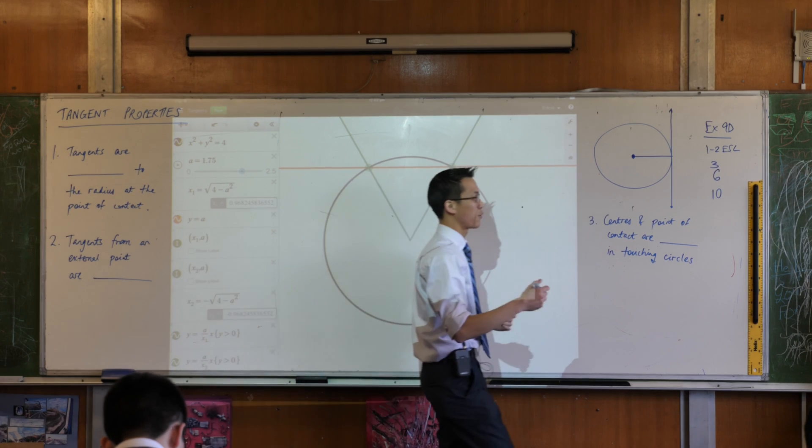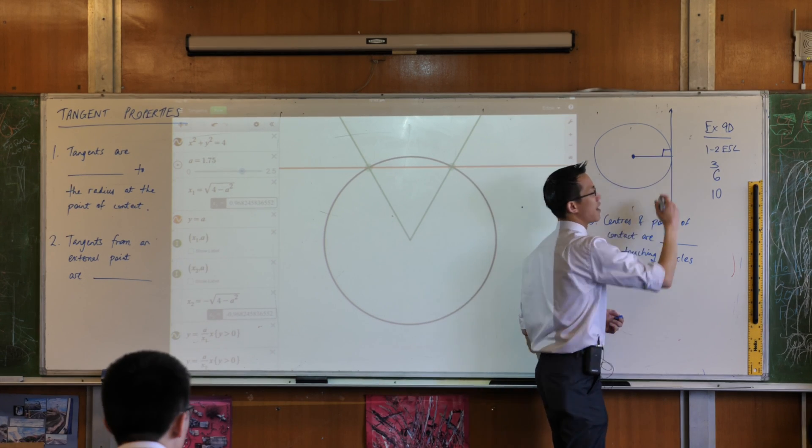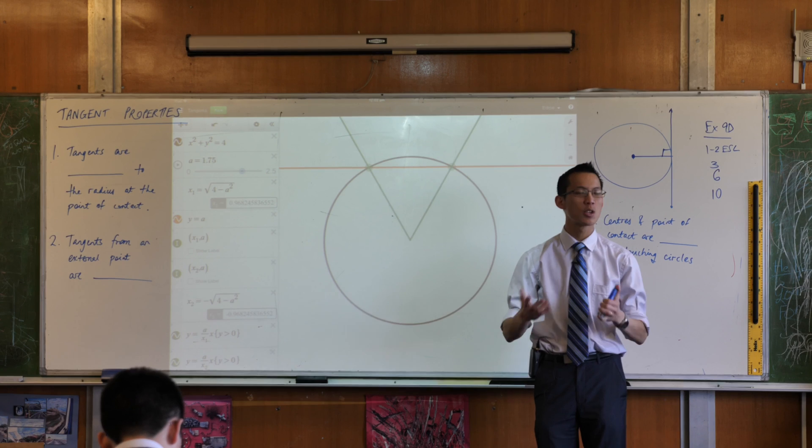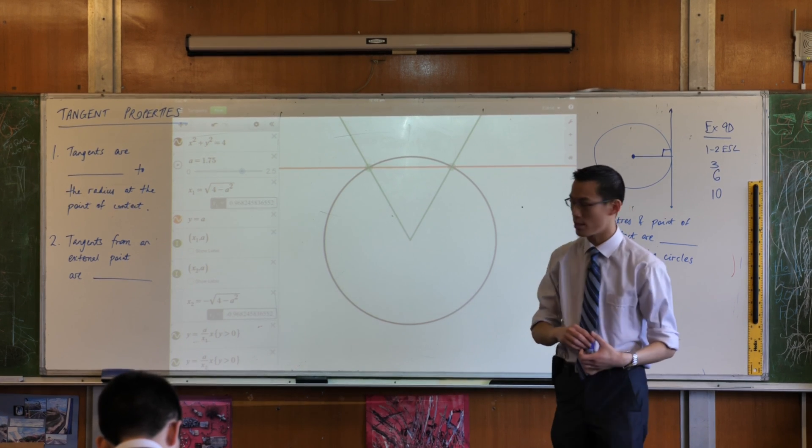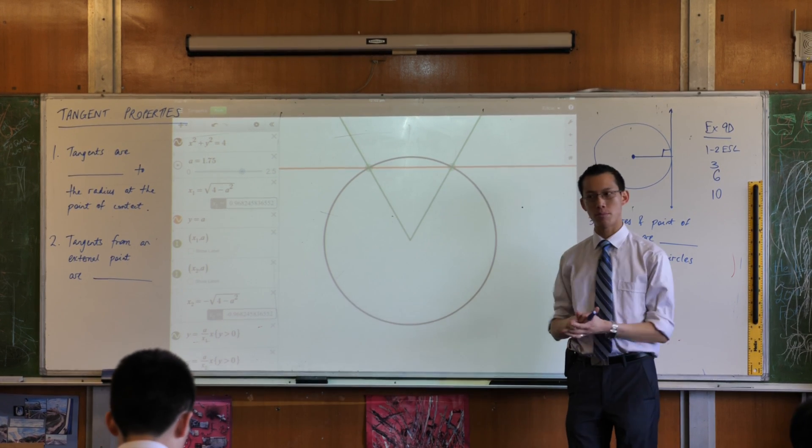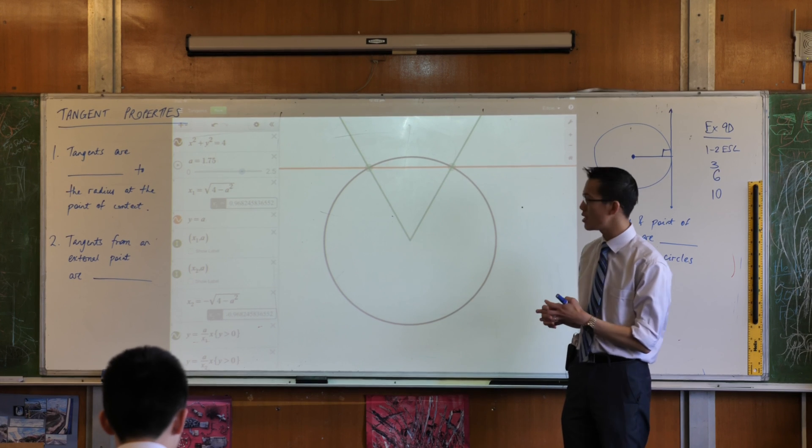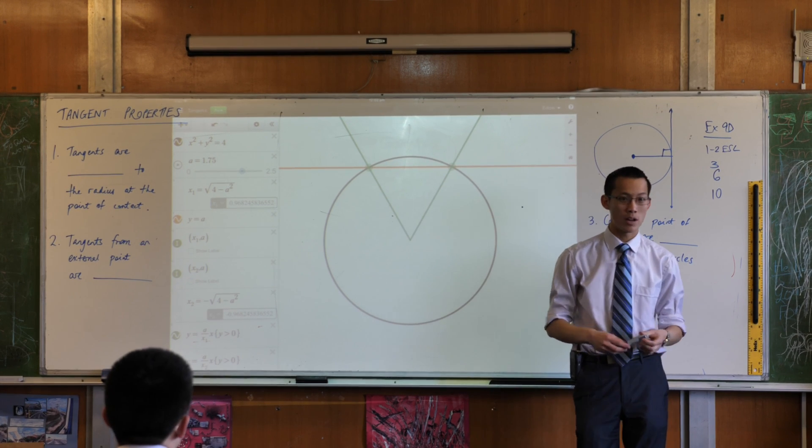They sure look like they're at right angles, don't they? Now of course it's not enough to just say they look like they're at right angles, we want to prove that this is the case. As with most geometry proofs, there's a variety of different ways to do this, but this one I'm about to show you is one of my favorites.